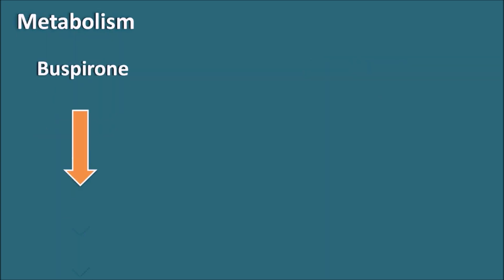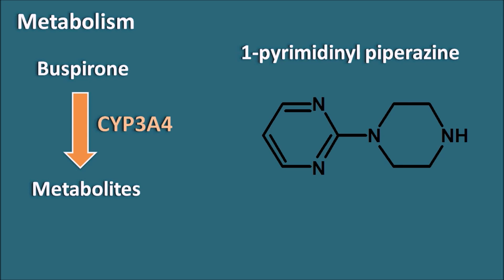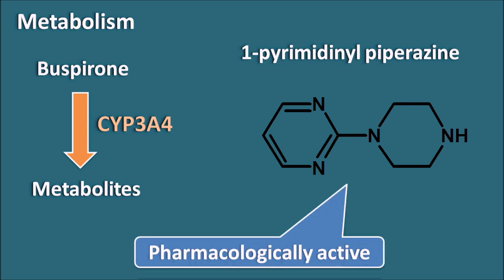Metabolism: buspirone is mainly metabolized by the hepatic system, and one of the important enzymes responsible for its metabolism is CYP3A4. So if any drug is going to affect CYP3A4, it can alter the metabolism of buspirone, leading to drug interactions. One of the metabolites of buspirone is 1-pyrimidinyl-piperazine. Buspirone is cleaved to give 1-pyrimidinyl-piperazine, and this metabolite is pharmacologically active, thereby it can also produce some anxiolytic activity.